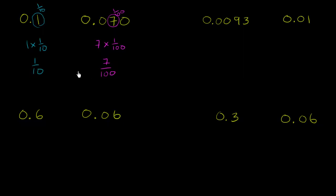And now we can compare these two numbers. You could try to turn 1 tenth into hundredths. If you want the denominator to be increased by a factor of 10, you need to do the same thing to the numerator. So multiplying numerator and denominator by 10, 10 hundredths is the exact same thing as 1 tenth. And here it becomes very clear: 10 hundredths is definitely larger than 7 hundredths.